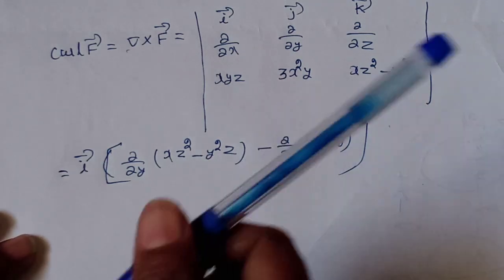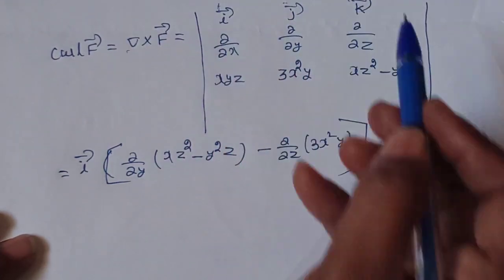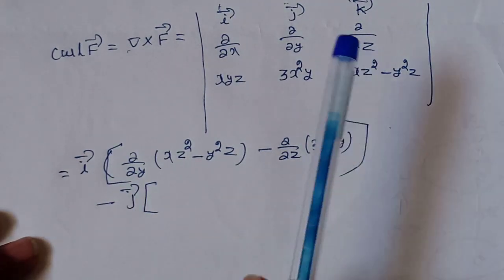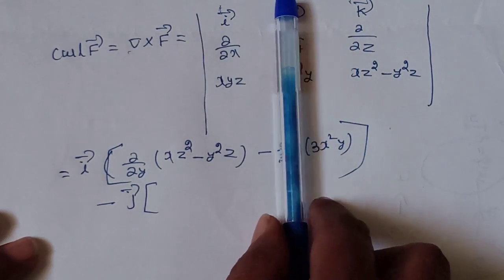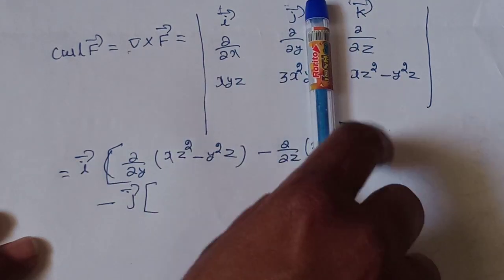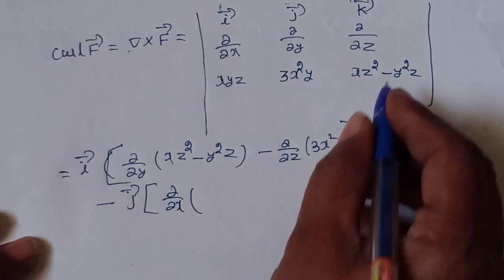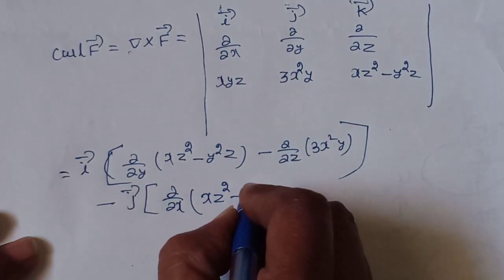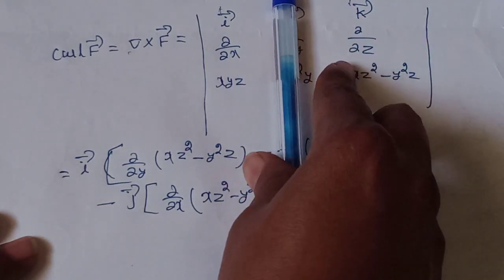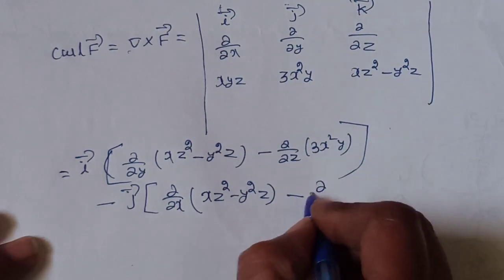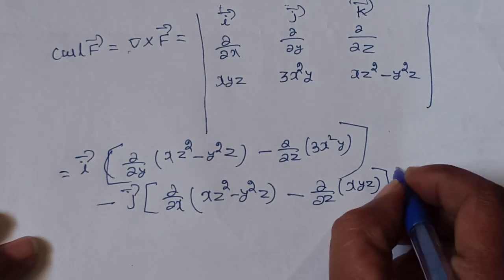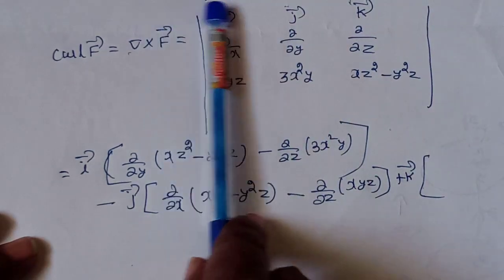For the j-vector, it carries a minus sign — minus j-vector times its 2×2 determinant. Main diagonal: d/dx of (xz² minus y²z). Off-diagonal minus d/dz of xyz. This gives the j-vector component.